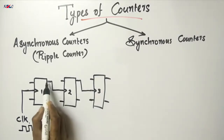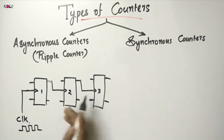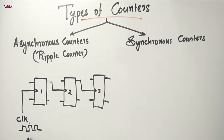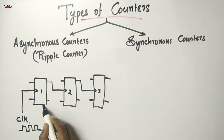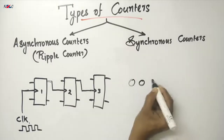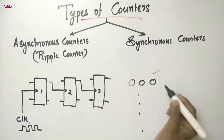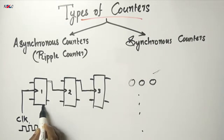The counting sequence depends on whether Q or Q-bar will act as the clock of the next flip-flop. For the first flip-flop, we have the external clock, and the LSB bit is provided with the first flip-flop. If we consider this circuit with three flip-flops and three bits of counting sequence, this counter will proceed. The LSB bit flip-flop receives the direct clock.